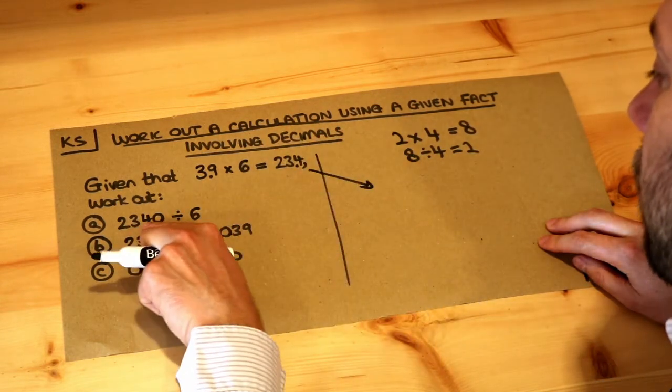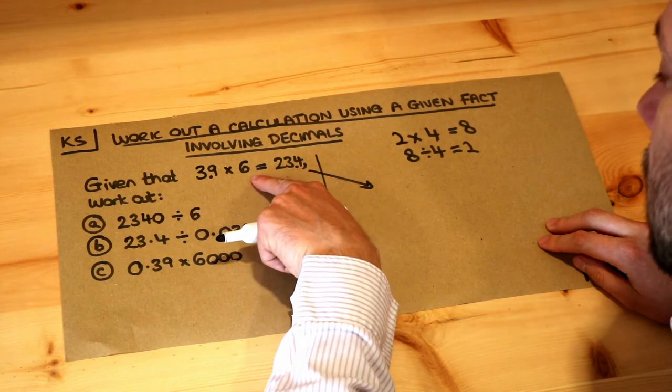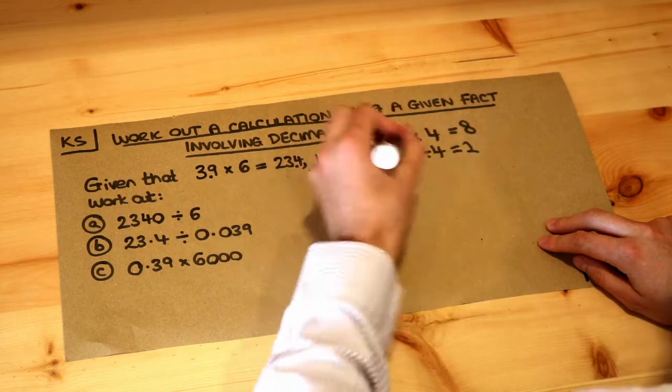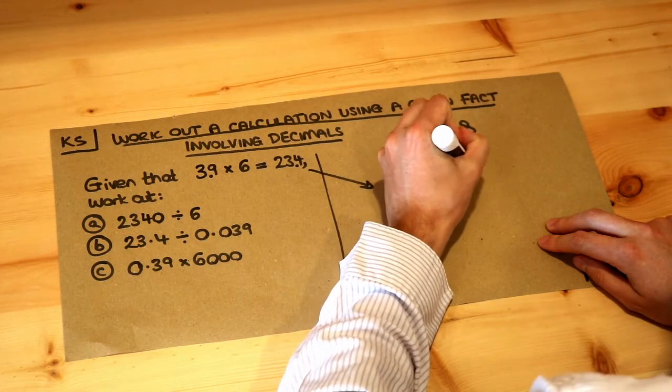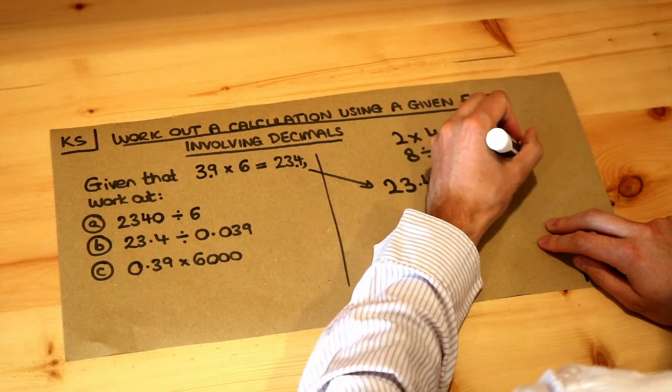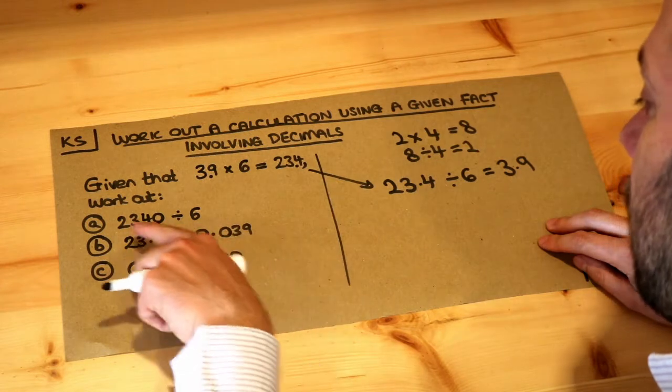So if I want to get the 2340 divided by 6, I could say that 23.4 divided by the 6 is 3.9. So let's write that. We know that 23.4 divided by 6 is equal to 3.9 by just using this multiplication. And now we can get the answer to A.